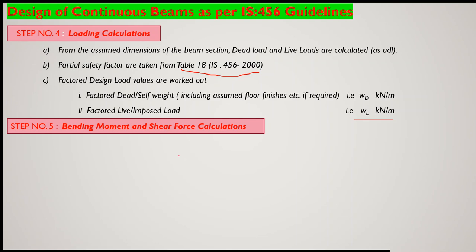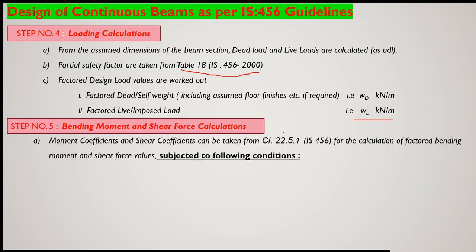Moving to step number five: a continuous beam with more than one span is an indeterminate structure. You must use an indeterminate analysis method such as the Kani method, moment distribution method, or another relevant method to calculate bending moment and shear force. However, the Indian Standard code also recommends an approximate method, providing bending moment coefficients and shear force coefficients given in IS 456.